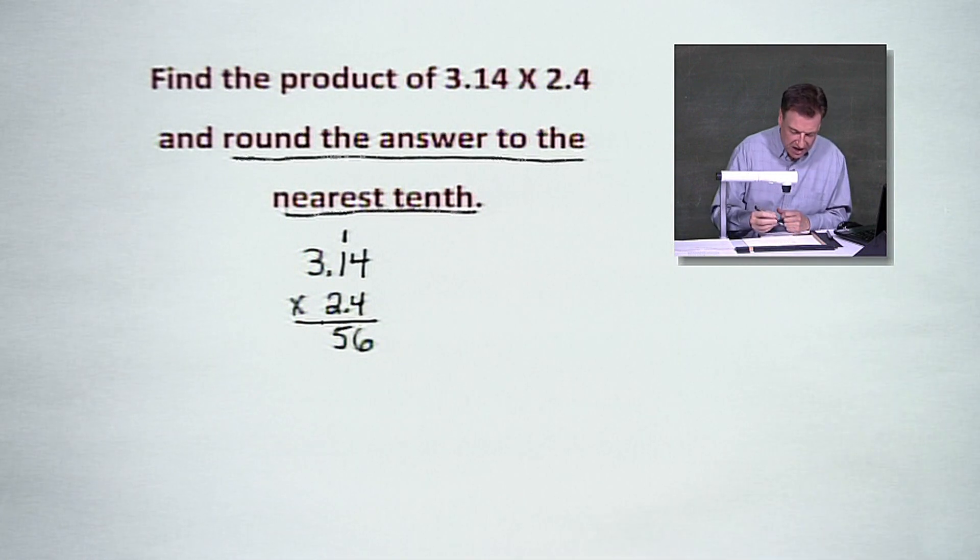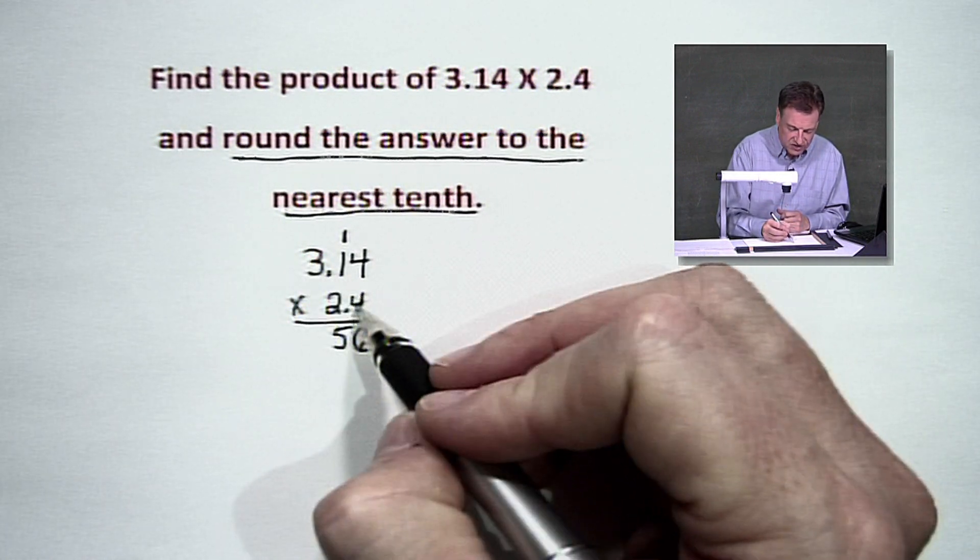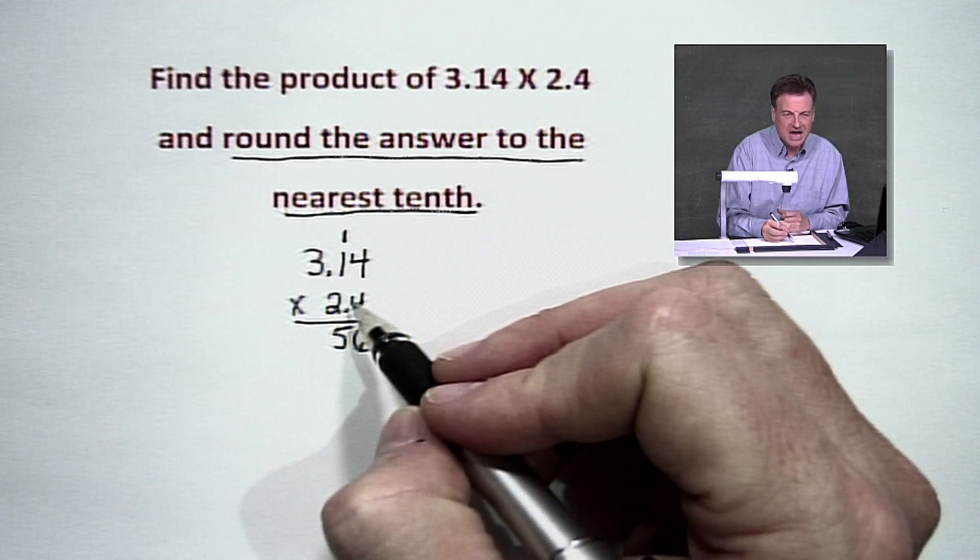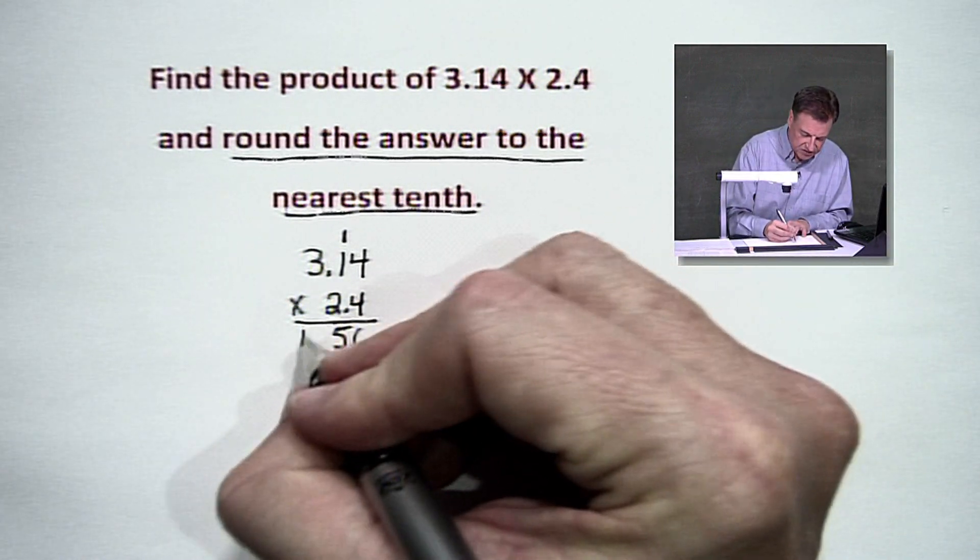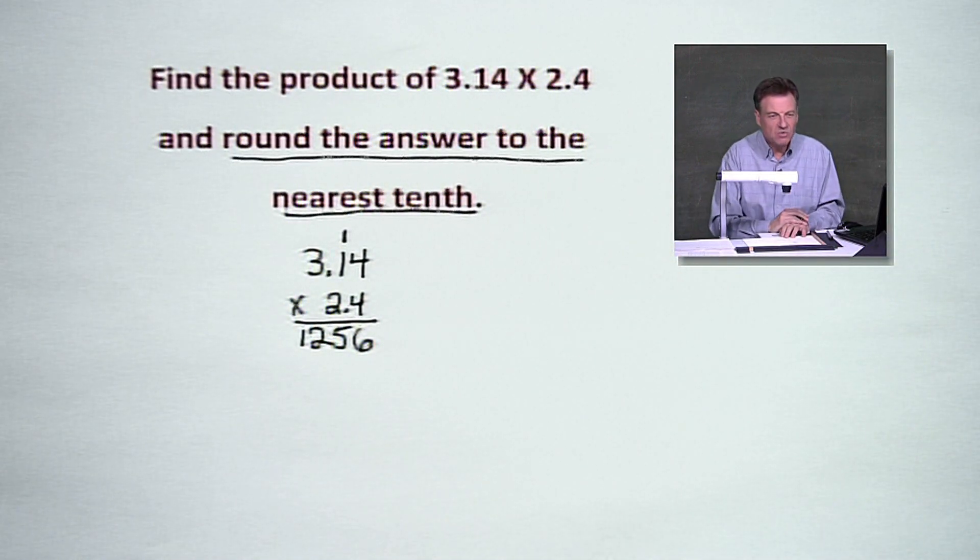We've got no carrying over here, so let's go to 3 times 4. We've got those times tables rolling. Looks like 1256 so far. We'll put a decimal in in just a minute once we get all this addition done.